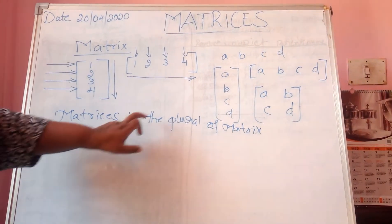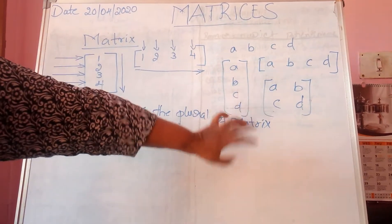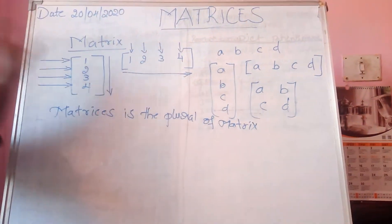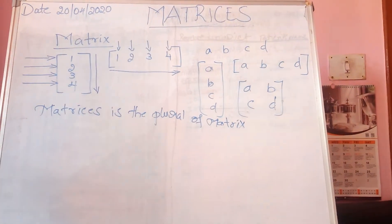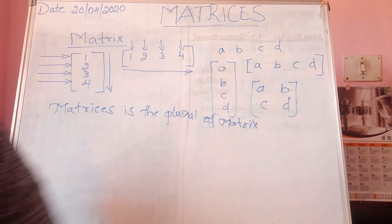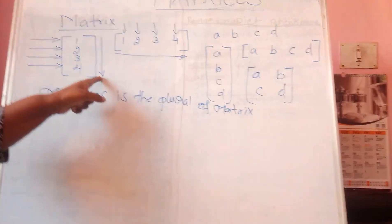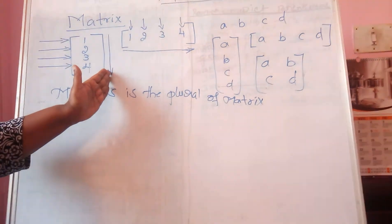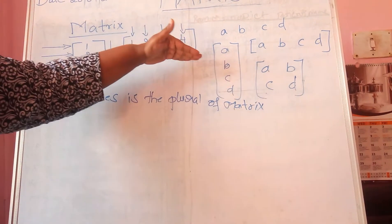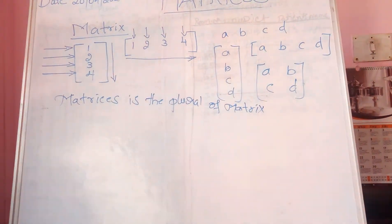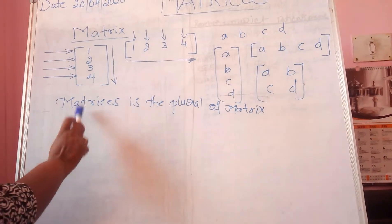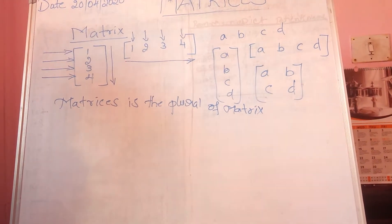Matrices is the plural form of matrix. So you learnt what a matrix is — an arrangement of numbers or any entity in the form of a rectangle. When any letter is given, you know how to arrange it. I told you what is a column and what is a row. The standing vertical line is called a column. The sleeping horizontal line is called a row. Matrices is the plural form of matrix.